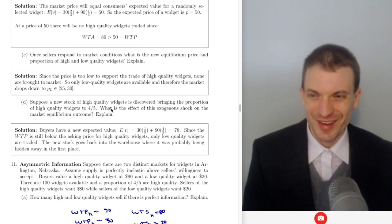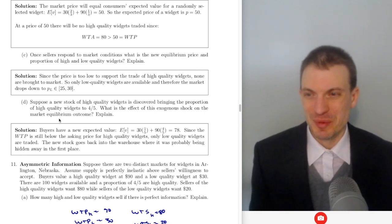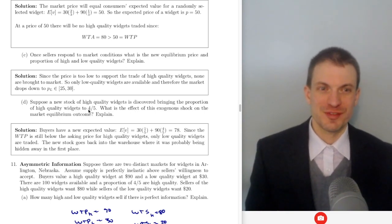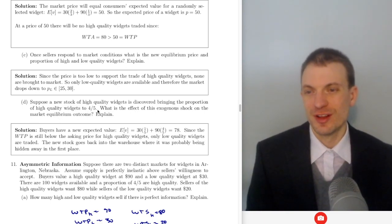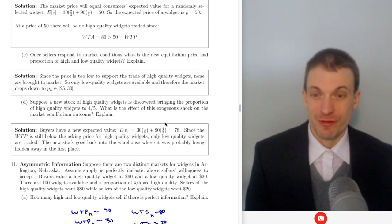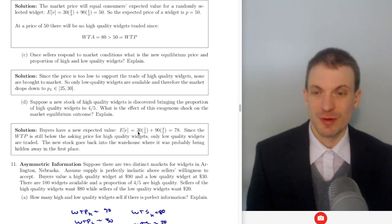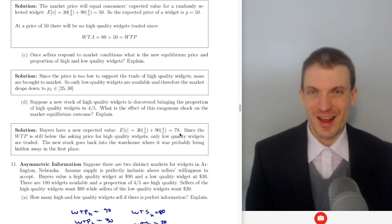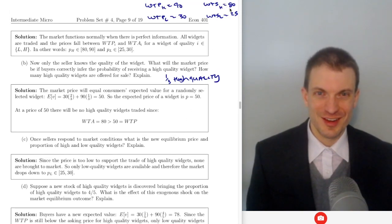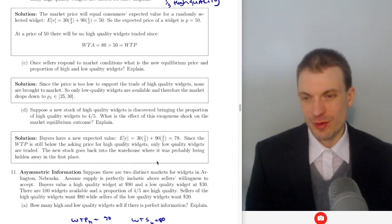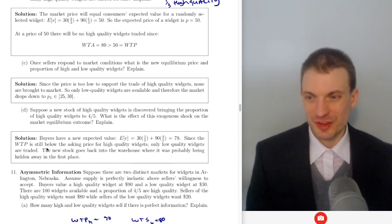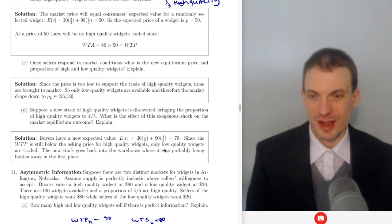Suppose a new stock of high quality widgets is discovered, bringing the proportion of high quality widgets to four fifths. The expected valuation becomes four fifths times $90 plus one fifth times $30, which gives $78. But that's still below the willingness to accept for sellers of high quality widgets at $80. Since the willingness to pay is still below the asking price for high quality widgets, only low quality widgets are traded.